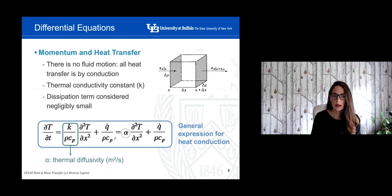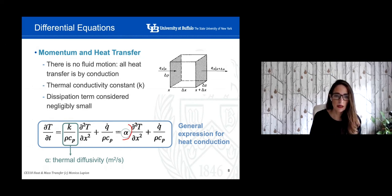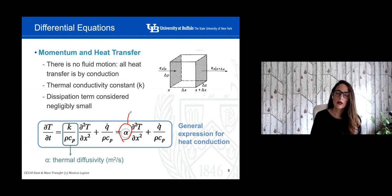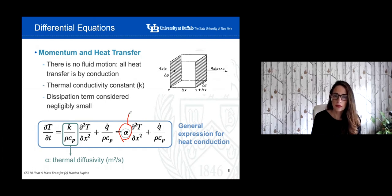We're also going to assume that the thermal conductivity k is constant — no variation of k with temperature. That's why this term, which depends on k, can come out of the integration when we solve the differential equation. And we're not going to consider any kind of energy dissipation; we assume all heat will be transferred through the element by conduction.